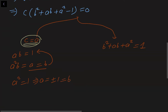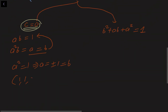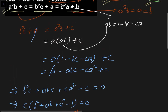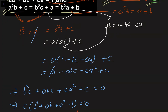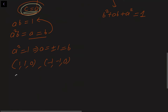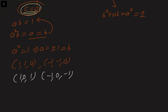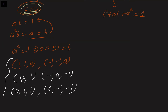This gives solutions (1, 1, 0) and (−1, −1, 0). Since I only used the first two equations, by symmetry we also get permutations where A = 0 or B = 0. So we additionally get (1, 0, 1), (−1, 0, −1), (0, 1, 1), and (0, −1, −1). That's 6 solutions from Case 1.